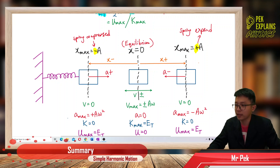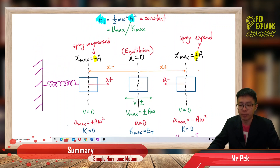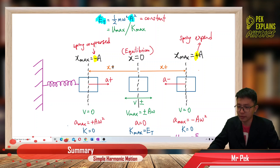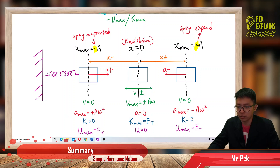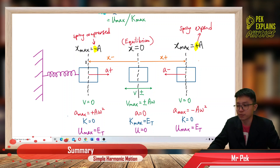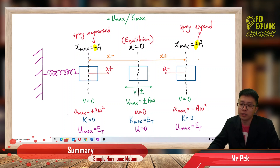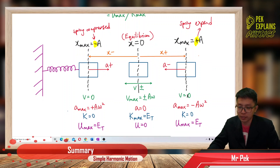Positive displacement means the spring expands or becomes longer; negative displacement means the spring is compressed. If you expand the spring, displacement is positive. If you compress the spring, displacement is negative.